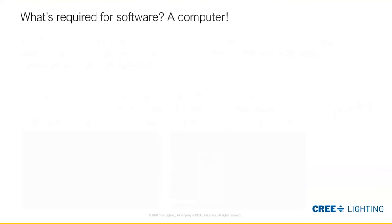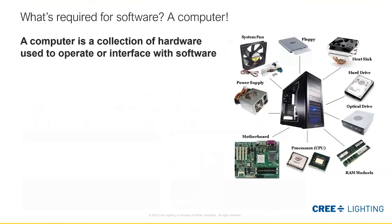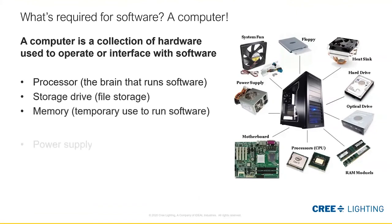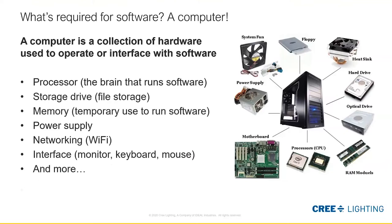So what's required for software? Pretty easy — a computer. Computers can take a lot of shapes and forms, but typically we think of a laptop or some sort of tower-based computer. A computer is essentially a collection of hardware — a variety of different physical components that allow it to run software, which is ultimately the goal. You'll find these components not only in computers but also in our light fixtures themselves — everything from processors, which are the brain of the system, to file storage drives and power supplies.